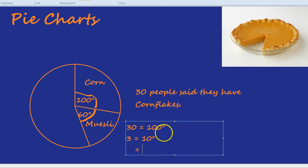A 60 degree angle. 10 times by 6 gets you to 60. 3 times by 6 is 18. So it must be 18 people who like muesli, because there's a 60 degree angle here. That is one interpretation of a pie chart.